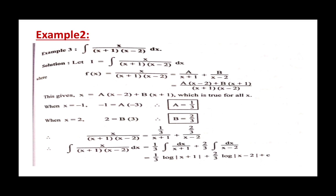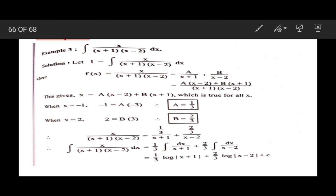See the second example. Evaluate ∫x / [(x + 1)(x − 2)] dx. First we have to find the partial fraction of this term. Since the denominator has linear different factors, we can write this as A/(x + 1) + B/(x − 2). By simplifying this, we get A = 1/3 and B = 2/3. Then we will substitute A and B.